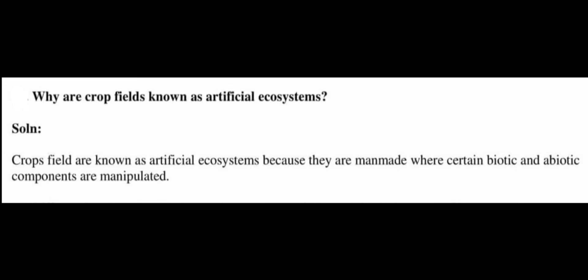Question number 1. Why are crop fields known as artificial ecosystems? Crop fields are known as artificial ecosystems because they are man-made where certain biotic and abiotic components are manipulated. The soil in the crop field is prepared by the farmer by plowing, adding manure or fertilizer, and the crop that is grown is also selected by the farmer and the seeds are sown. That's why a crop field is considered as an artificial ecosystem.